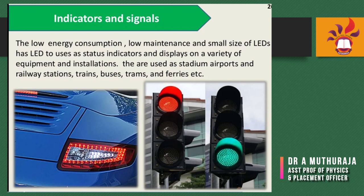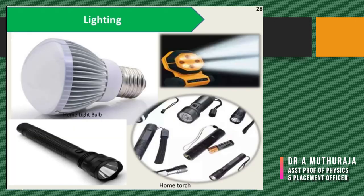Traffic signals now use LEDs because of their very low energy consumption, low maintenance, and small size — used as status indicators and displays on a variety of equipment. LEDs are used in stadiums, airports, railway stations, trains, buses, trams, and ferries. In lighting, many applications exist commercially: torches, smart bulbs, home lights in different shapes and power ratings are all available.